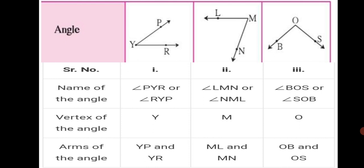Now let's name the vertex of each angle. In the first figure, we have vertex Y. In the second figure, we have vertex M. In the third figure, we have vertex O. Now for the arms of the angle — remember, arms always begin with the vertex. In the first figure, the two arms are YP and YR. In the second figure, the arms are ML and MN. In the third figure, the arms are OB and OS.